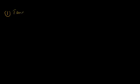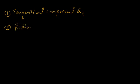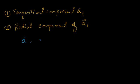The acceleration of a body moving in a curved path has two components. One is called the tangential component of acceleration, represented by A_T, and the other is the radial component of acceleration, represented by A_R. The total acceleration vector can be written as the sum of the radial component and the tangential component.